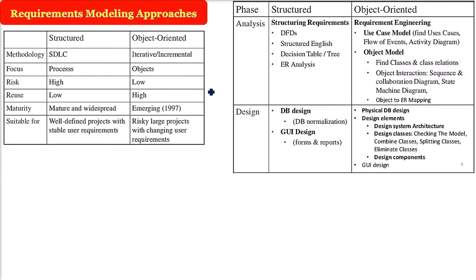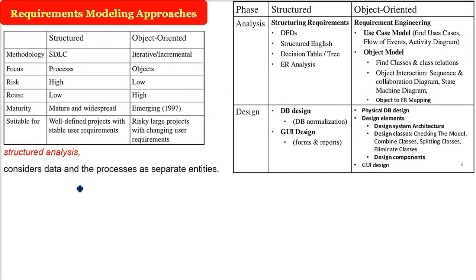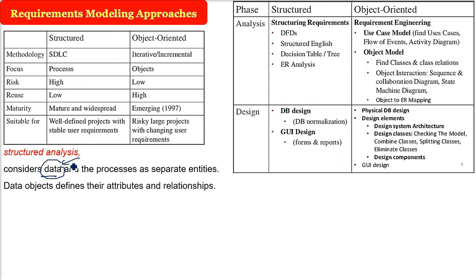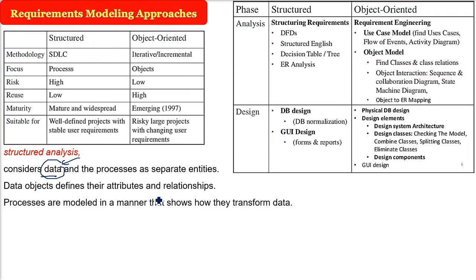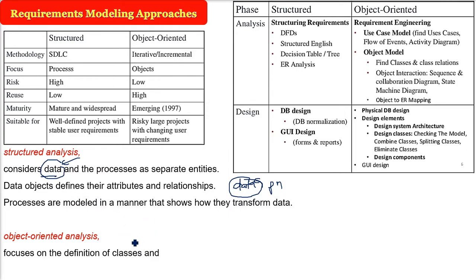There are different approaches in requirement modeling. The first approach is structured analysis: it is all about functions. It considers data and processes as separate entities — not in a capsule like object-oriented. Data objects define their attributes and relationships, and processes are modeled to show how they transform the data. When it comes to object-oriented analysis, this focuses on classes. Classes give rise to objects, and these classes will collaborate so that customer requirements can be fulfilled.